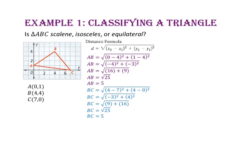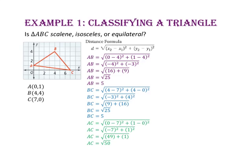Let's now use the ordered pairs for points A and C to find the length of segment AC. The length of segment AC equals the square root of (0 minus 7) squared plus (1 minus 0) squared. 0 minus 7 is negative 7, and 1 minus 0 is 1. Negative 7 squared is 49, and 1 squared is 1. 49 plus 1 is 50, and the square root of 50 is 5 radical 2, or approximately 7.1. Since the length of segment AC is not equal to the length of segments AB and BC, then we have an isosceles triangle.